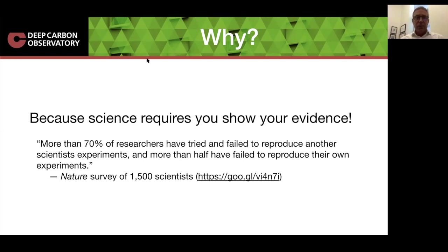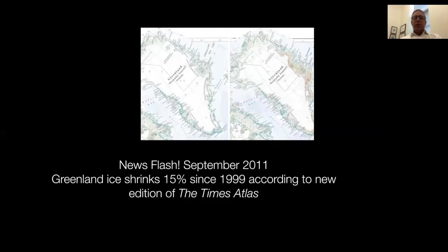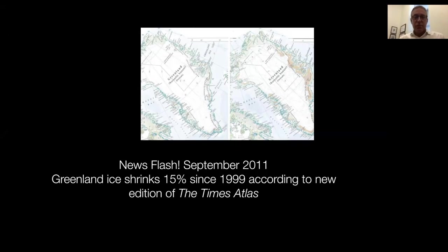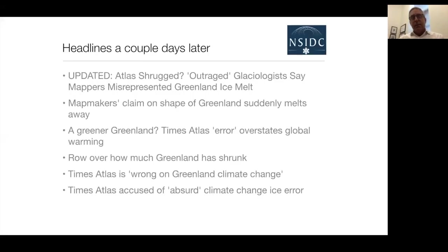And to give you maybe just an illustration of that, here's a little story. Back in 2011, when I was working for the National Snow and Ice Data Center, the Times Atlas put out a news release saying that the Greenland ice sheet has shrunk by 15% since 1999. So in 12 years, the ice shrunk 15%. But then headlines a couple of days later — outrage, glaciologists say that mappers misrepresented the data. Map makers claim when the shape of Greenland suddenly melts away, etc.